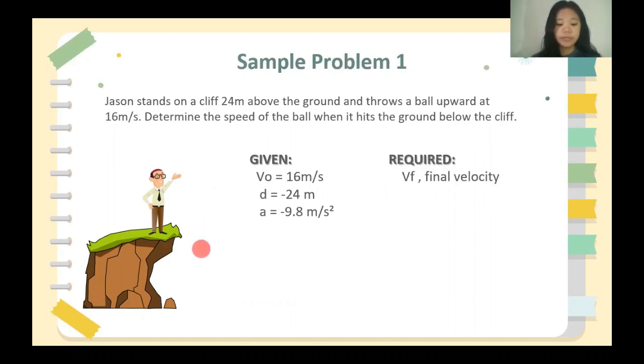The problem requires final velocity, or the speed of the ball when it hits the ground below the cliff. And the equation we'll be using is the squared of final velocity equals squared of initial velocity plus 2 multiplied by the gravitational acceleration, multiplied by the distance.